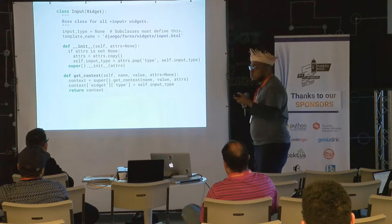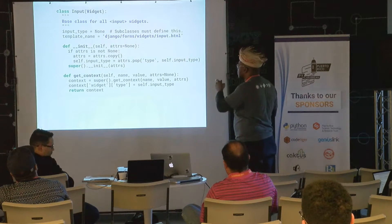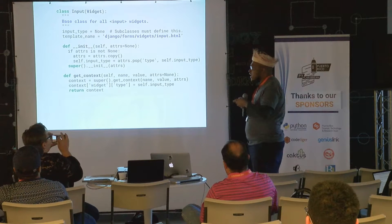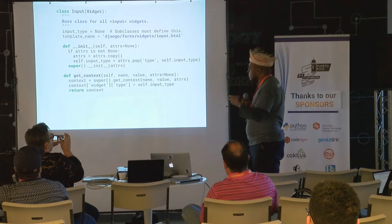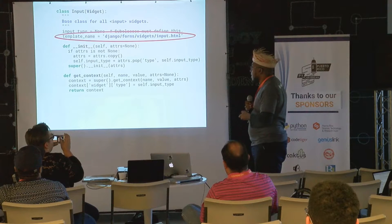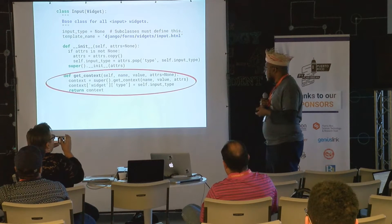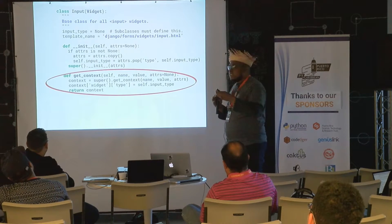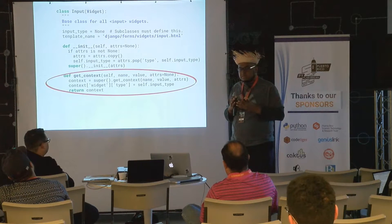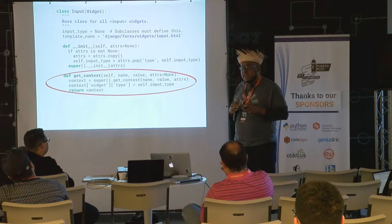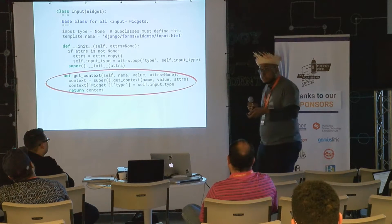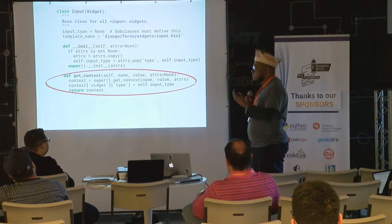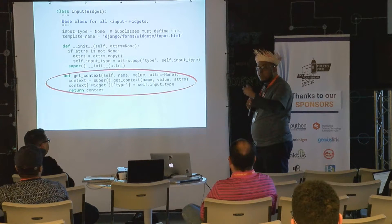The interesting thing about it is if you have used class-based views in Django, you can notice that this is the same language. You have a template name, you have an init method where you basically load all the attributes information, and you have a get_context. You can see that template_name is really common for Django views. And the get_context is where things get really interesting because you are interacting with something familiar. In the last few releases of Django, a lot of things that were not standardized are becoming more and more similar — even channels work pretty similar to views. Django is improving a lot in consistency across the framework.